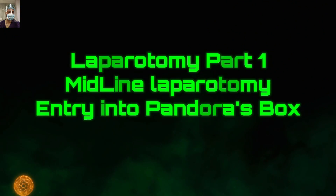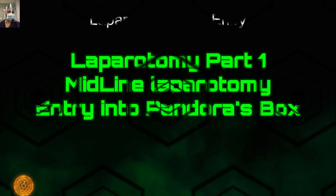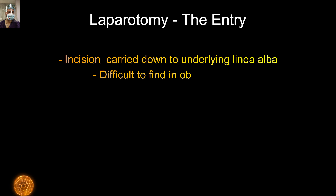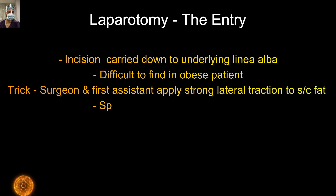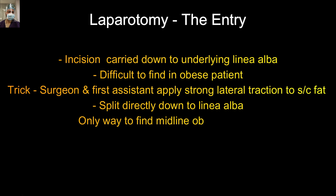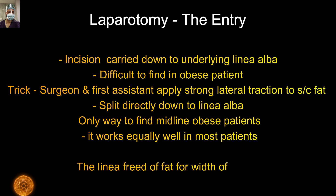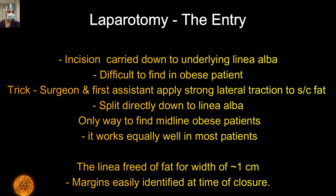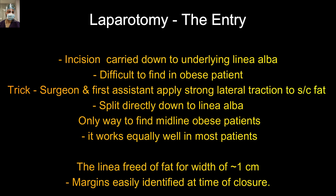We will not go into theoretical discussion as most points have already been covered. This first video demonstrates a midline laparotomy. The incision is carried down to the underlying linea alba. How to find the midline in an obese patient — the surgeon and the first assistant apply strong lateral traction to the subcutaneous fat and you will automatically go to the midline. We free the linea alba on both sides — right and left — up to one to two centimeters, so that we get good margins when closing the laparotomy.